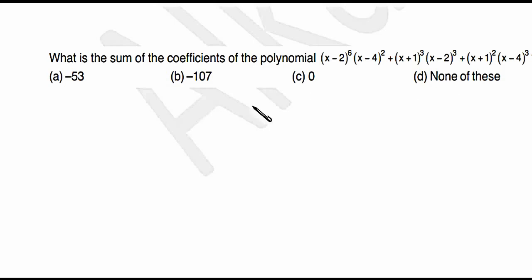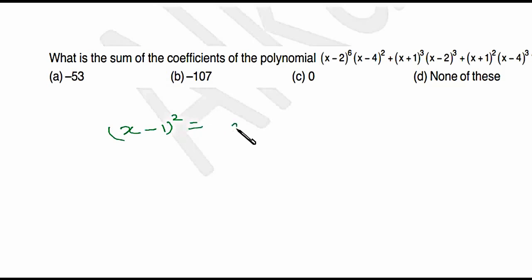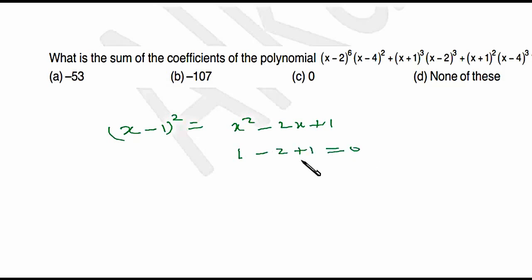I'll share one fundamental logic. Suppose you have (x − 1)², that is x² − 2x + 1. The sum of coefficients is 1 − 2 + 1 = 0. Similarly, suppose I have (x + 1)², that is x² + 2x + 1.